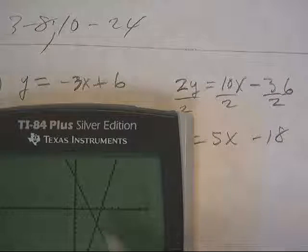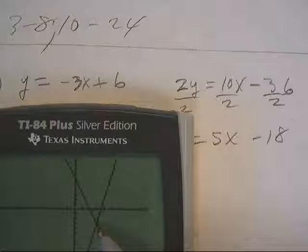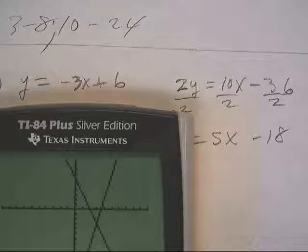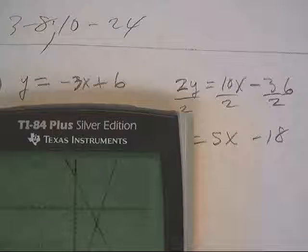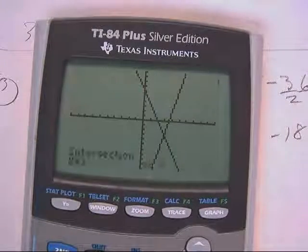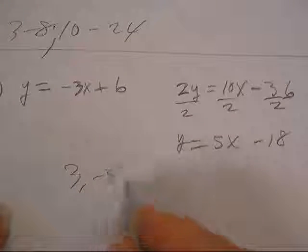Notice they crossed 1, 2, 3, 1, 2, 3. It's looking like it's negative 3, negative 3, but let's be sure. Just do second trace, 5, enter, enter, enter. It was 3, negative 3. So you do 3, negative 3.